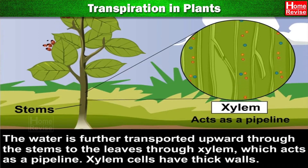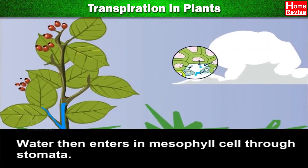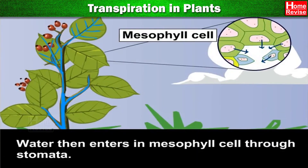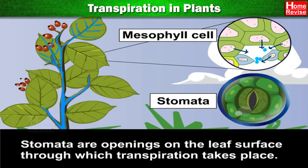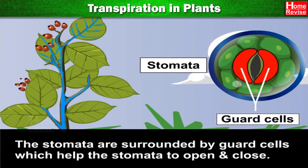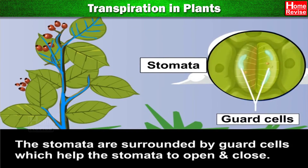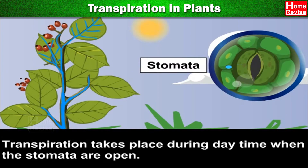Xylem cells have thick walls. Water then enters the mesophyll cells through stomata. Stomata are openings on the leaf surface through which transpiration takes place. The stomata are surrounded by guard cells which help the stomata to open and close. Transpiration takes place during daytime when the stomata are open.